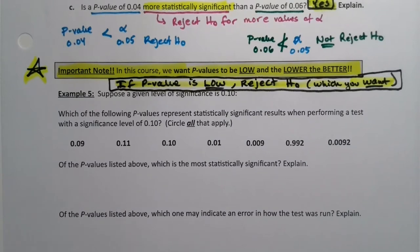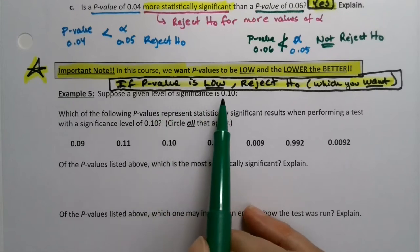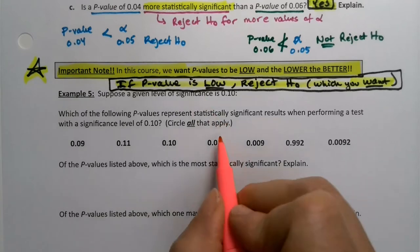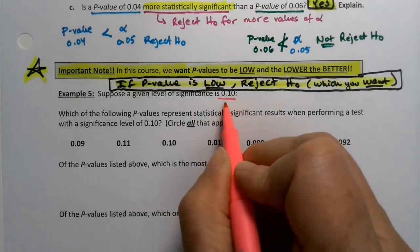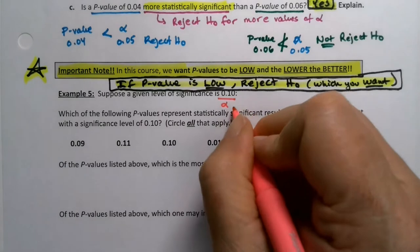Statistical significance is rejecting the null. If your p-value is low, you get to reject the null — that's statistically significant. So the lower the p-value, the better. Taking that into account, suppose you had a significance level of 0.10 — that's your alpha. They're giving you an alpha, so your alpha is 0.10.